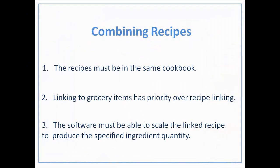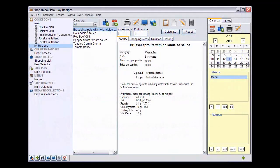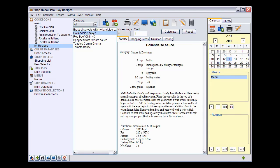The third rule for recipe linking is somewhat more complicated. The software must be able to scale the linked recipe to produce the specified quantity, and if you have some problem linking your recipes, chances are that this rule is not fulfilled. Let me illustrate it with an example. This recipe for Brussels sprouts with Hollandaise sauce is not linked to the recipe for Hollandaise sauce that is in the same cookbook.